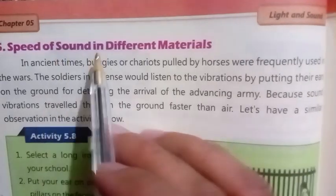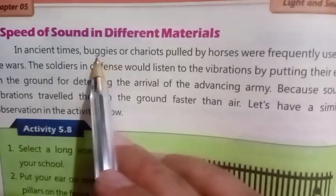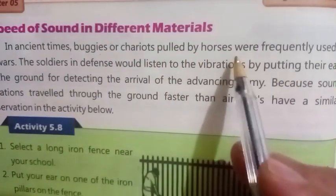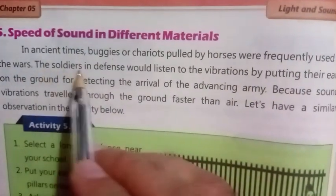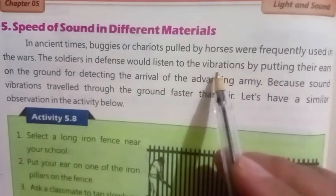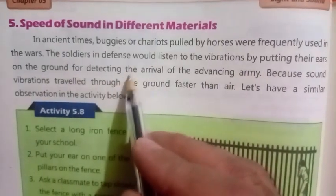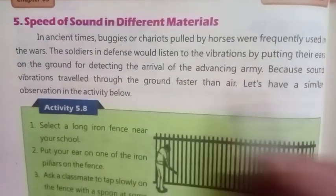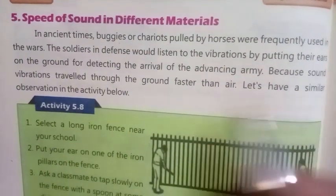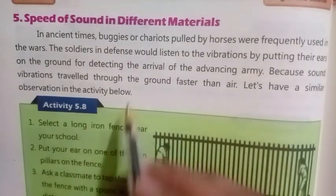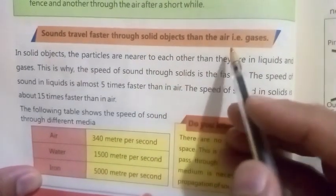Number five: Speed of sound in different materials. In ancient times, buggies and carts pulled by horses were very frequently used in wars. The soldiers in defense would listen to the vibrations by putting their ears on the ground for detecting the arrival of the advancing army, because sound vibrations traveled through the ground faster than air.